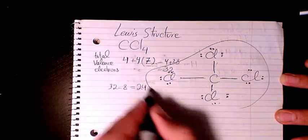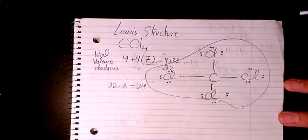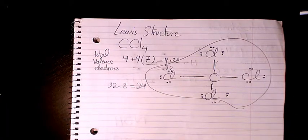So this is the structure, or Lewis structure, of carbon tetrachloride or CCl4. I hope you enjoyed this video. Please leave a comment if you have any question and I'll get back to you as soon as possible. And please don't forget to subscribe this channel. Thank you.